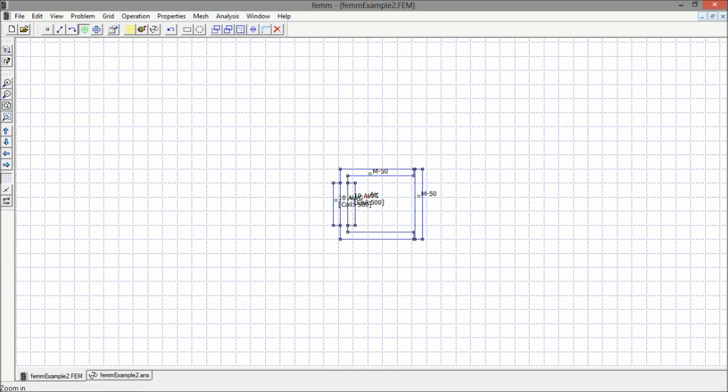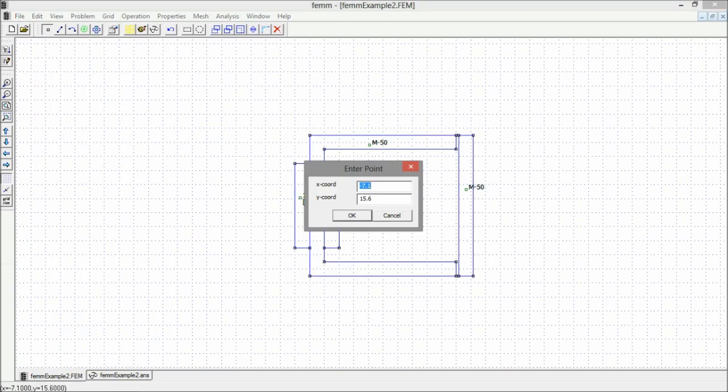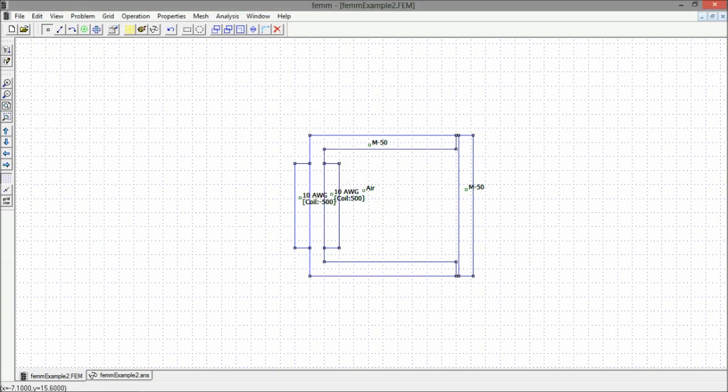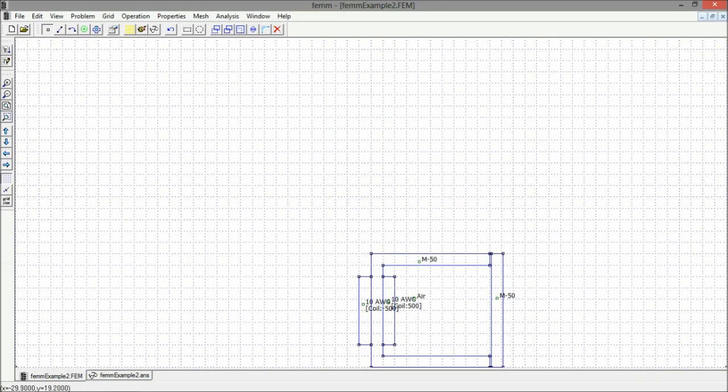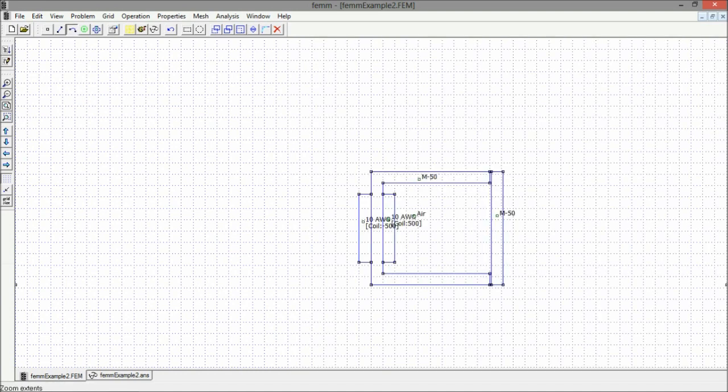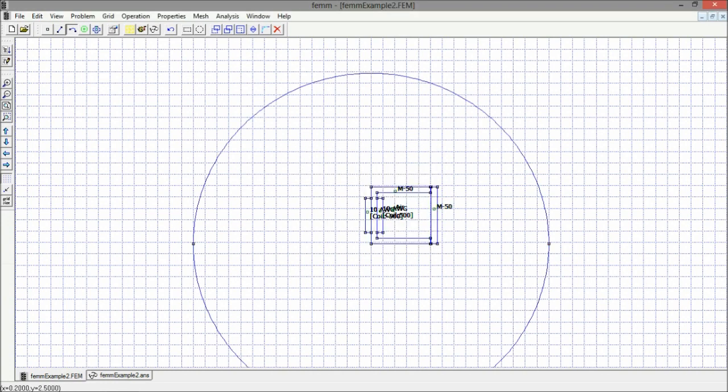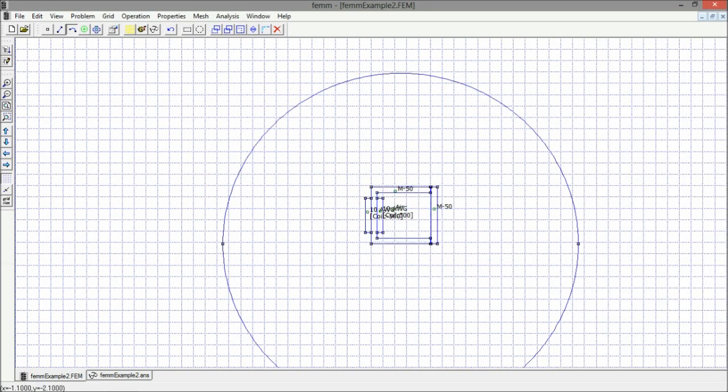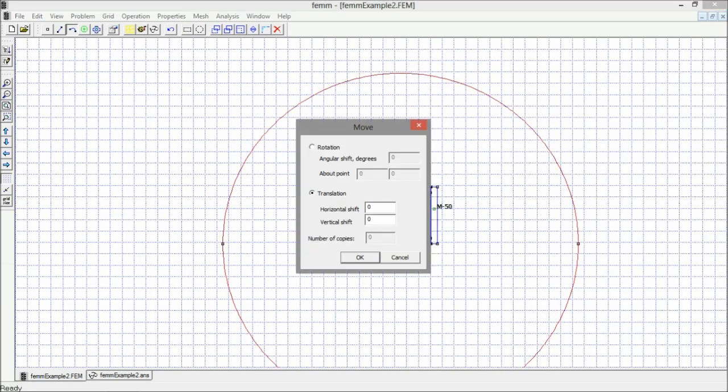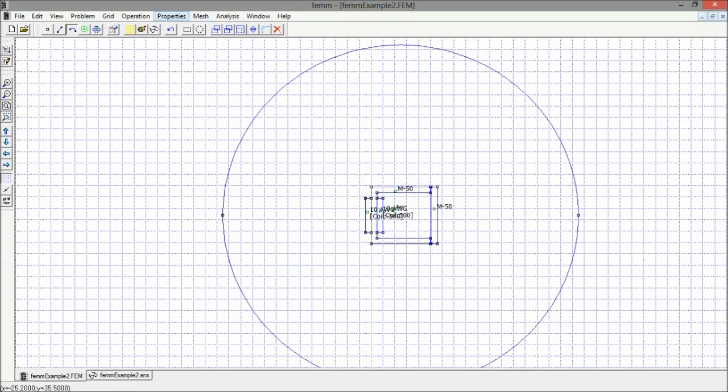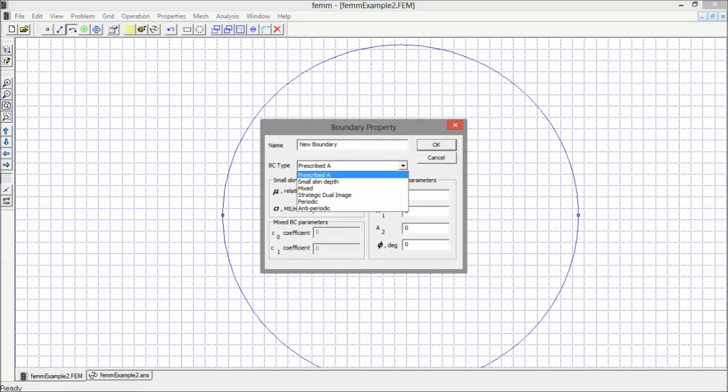A mistake that is made quite often is not assigning the correct boundary conditions. Sometimes you need to refer back to the preprocessor page and create boundaries which essentially sets the area limitation for the software to only solve the problem within that area and exclude any information outside that area.